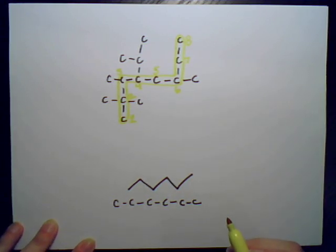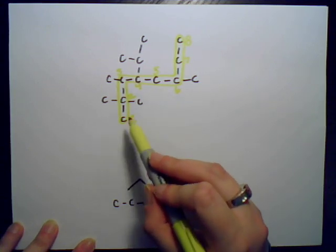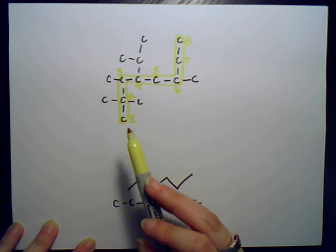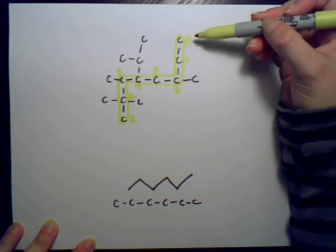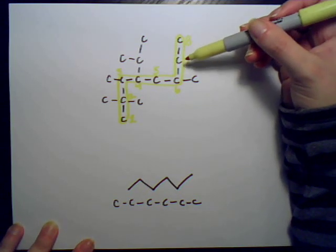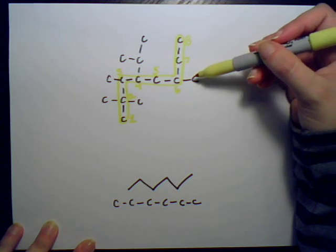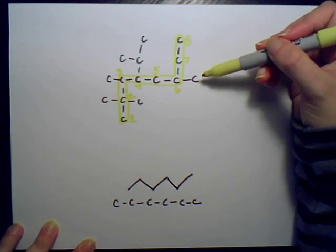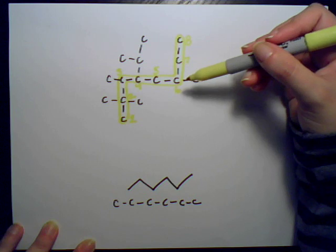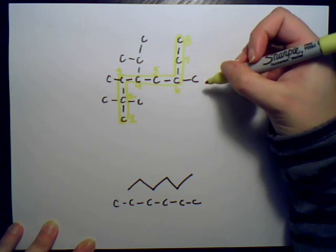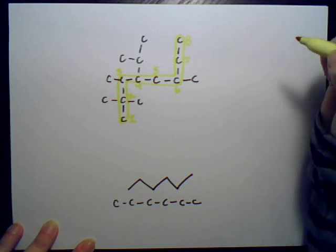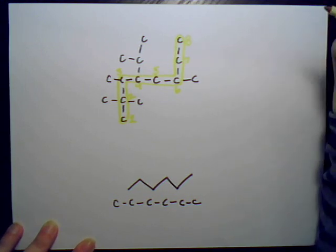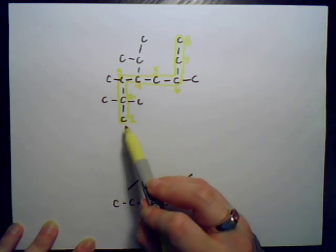What's important to remember when numbering your carbons: starting here gives one, two, three — and you can see there are already things attached at carbon two, three, and four. However, if I had started numbering from up here, the first substituent would be on carbon three. IUPAC wants us to number the chain so that the substituents have the lowest number possible — that's why we started over here and went this way.